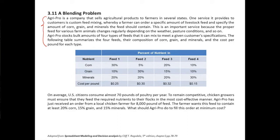This company has four types of feed specified here: feed one, two, three, four, that contains different percentage of those corns, greens, and minerals. And the cost per pound for each of those feed differs too.